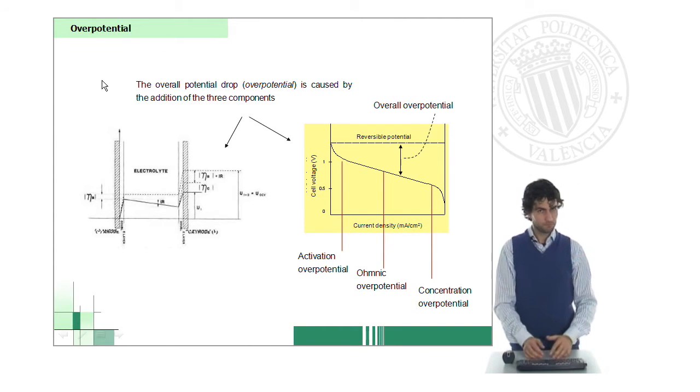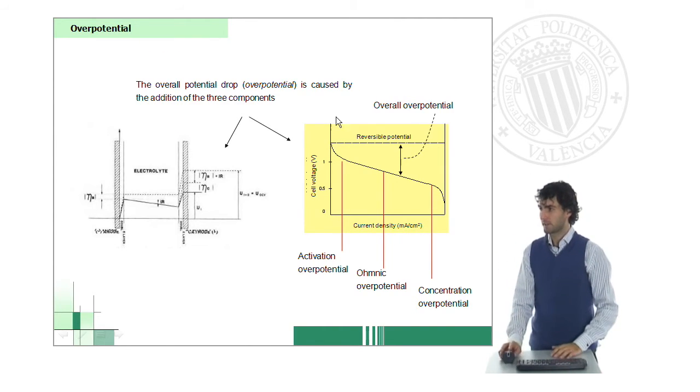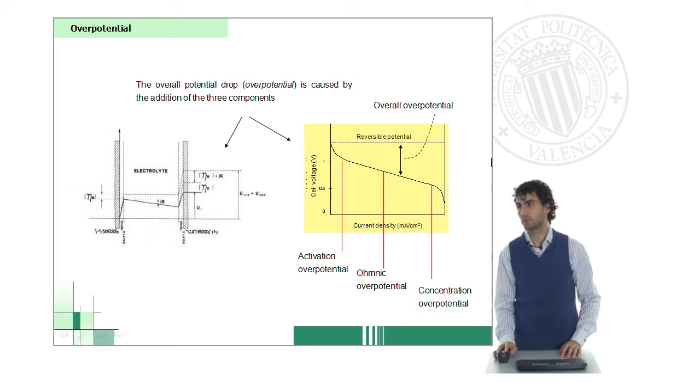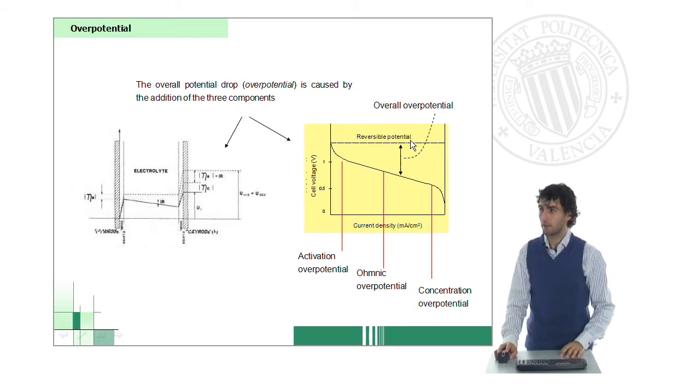In the end of the day, the polarization curve that we see here, is the sum of the three contributions of the three terms, activation, ohmic, and concentration polarization. And then, again, the overall overpotential is the difference between the point on the curve and the reversible potential.